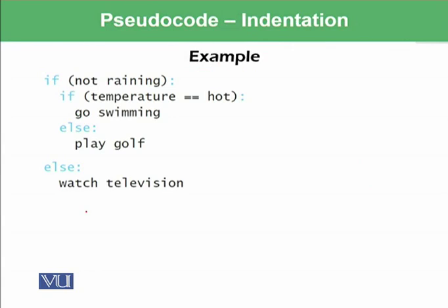So there is another concept which we want to cover over here, which is called the concept of indentation. So whenever we write code, we make it indent. What do I mean from indent is that we have written an if structure. So if not raining and then there is another if, if temperature is equal to hot, go swimming, else play golf, else watch television.